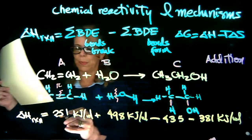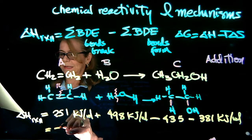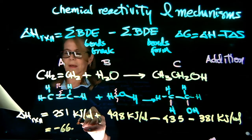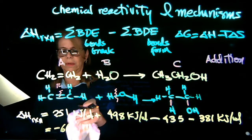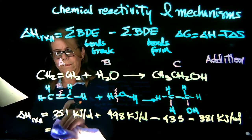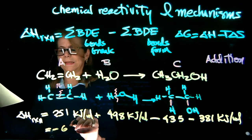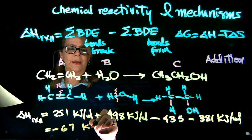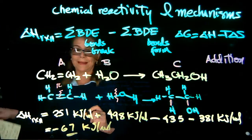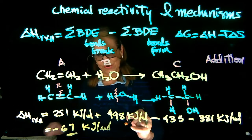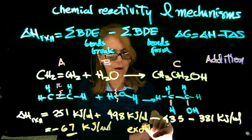When I add that up, the net result is negative 67 kilojoules per mole. What this means is that heat is released, so again, there is a negative sign, this reaction is exothermic.